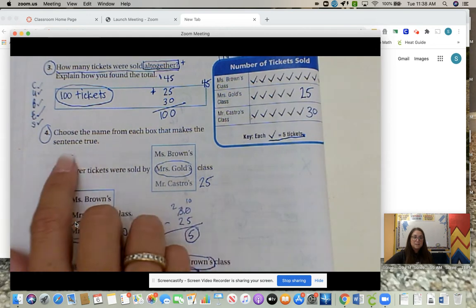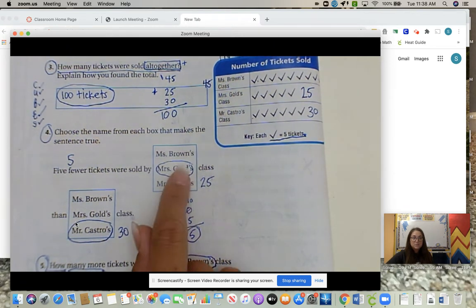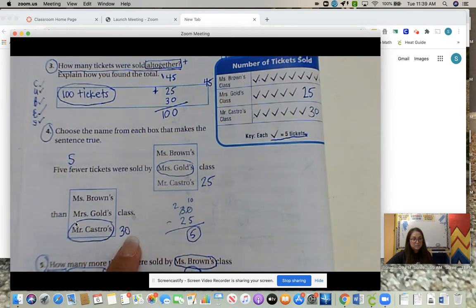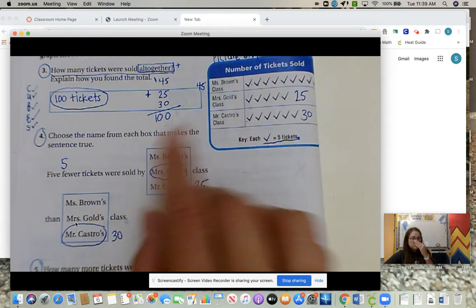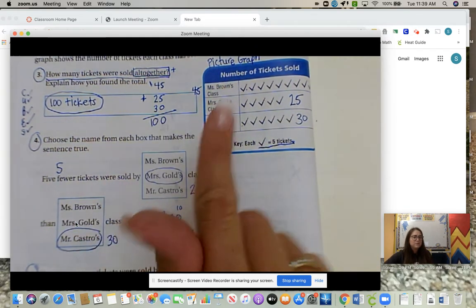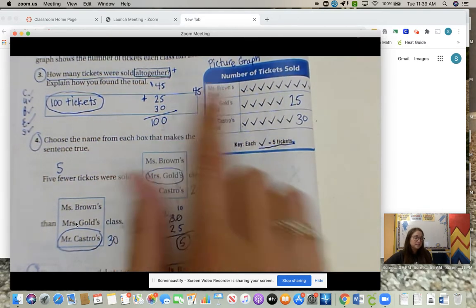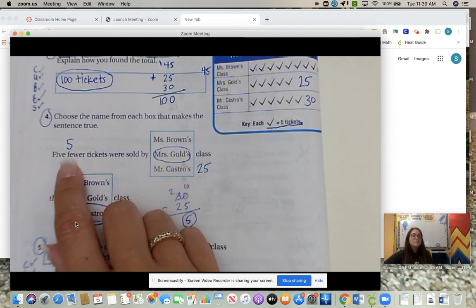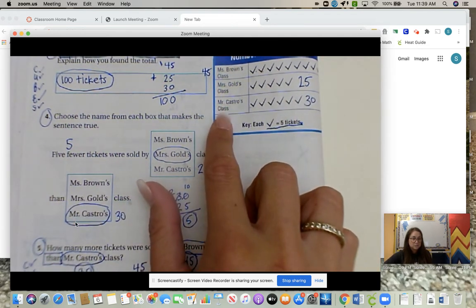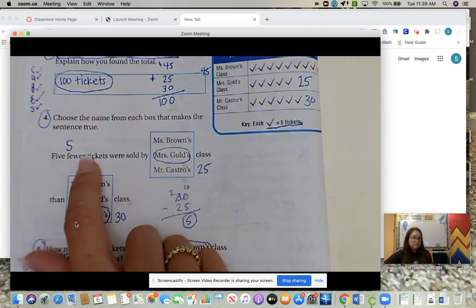Number four, choose the name from each box that makes the sentence true. Five fewer tickets were sold by Mrs. Gold's class, Mrs. Gold sold 25, than Mr. Castro's class, who sold 30. So what we would do is we had to look up at our graph. And where is there a five-ticket difference? Well, 25 and 45, that's a 20-ticket difference. What about 30 to 45? That's a 15-ticket difference. But 25 to 30, that's a five-ticket difference. And we're looking for five fewer. So who has the most out of Mrs. Gold and Mr. Castro? Well, Mr. Castro does. So he's going to have the most tickets. And so Mrs. Gold has the fewer tickets.